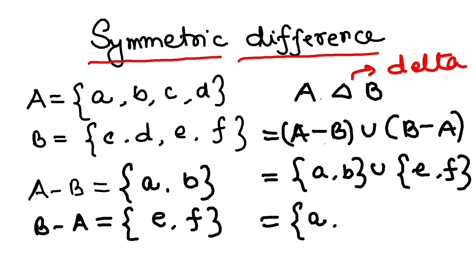So all of them will come: a, b, e, and f. So this is the value of A symmetric difference B, or A delta B. In the next video we shall be discussing complements.